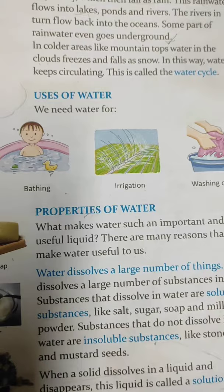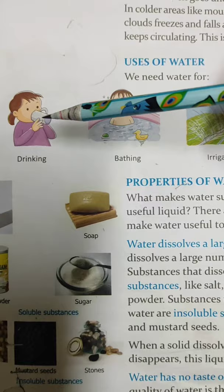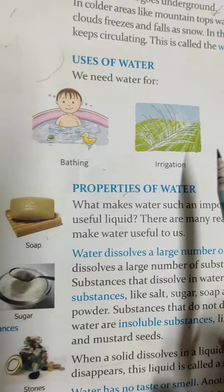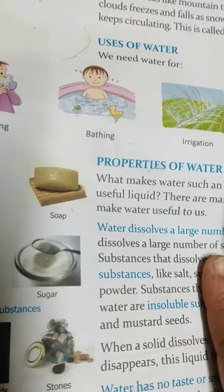Now, uses of water. All of you know what the uses of water are — you use water in day-to-day life. It is used for drinking, bathing, irrigation, and washing clothes. Irrigation means we are providing water to our crops. Agriculture mein bhi use hota hai jab hum apni faslon ko paani dete hain.